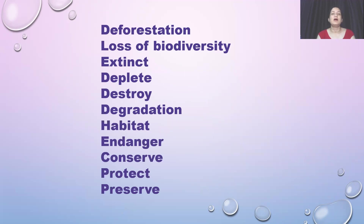Deforestation is a major problem which gives rise to global warming and many other environmental issues. Deforestation means cutting down trees and reducing the land under forest. Next is 'loss of biodiversity' — biodiversity is the wealth of plants and animals that God has gifted us. If there is no forest, there is obviously no shelter for animals and no trees, so loss of biodiversity will be there. Next, a very important word: 'extinct.' Extinct means no longer existing — like dinosaurs. Tigers and lions are endangered, still present on earth but in smaller numbers, whereas extinct means completely vanished.